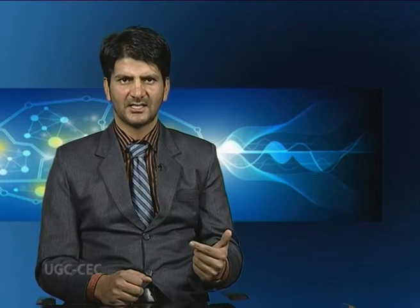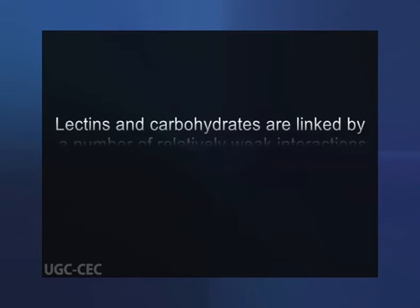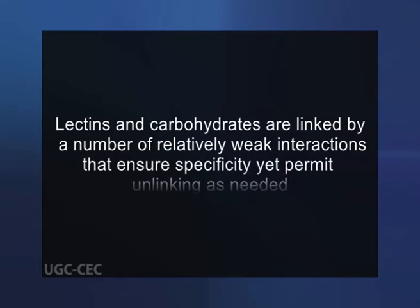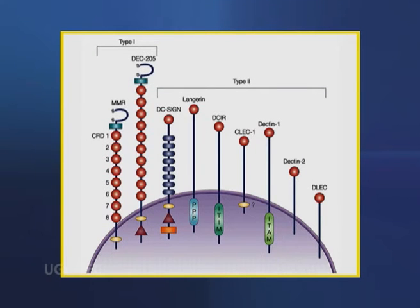The chief function of lectins in animals is to facilitate cell-cell contact. A lectin usually contains two or more binding sites for carbohydrate units. Some lectins form oligomeric structures with multiple binding sites. The binding sites of lectins on the surface of one cell interact with arrays of carbohydrates displayed on the surface of another cell. Lectins and carbohydrates are linked by relatively weak interactions that ensure specificity yet permit unlinking as needed, resembling the action of Velcro.